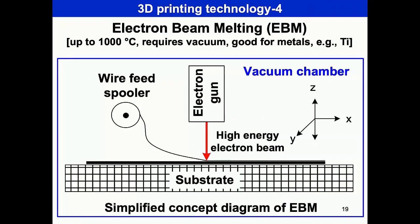Electron Beam Melting (EBM) is another technique related to 3D printing. In this case temperature can go up to 1000 degrees and it requires a vacuum. It is primarily good for metal 3D printing. You have a substrate plate where material is deposited, a metallic wire feed, and a high-energy electron gun which fuses the material layer by layer to build the 3D printed output.